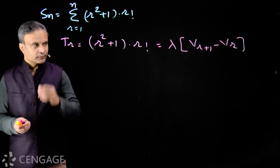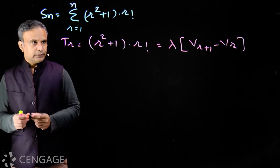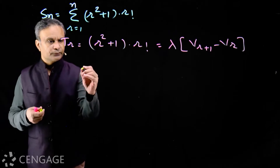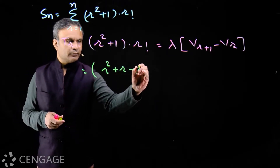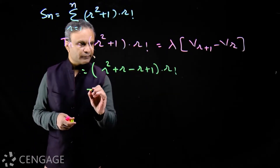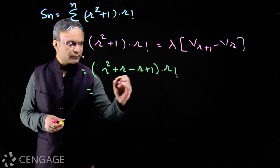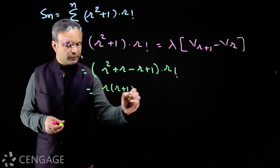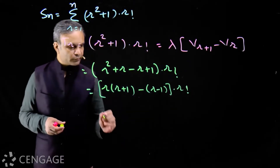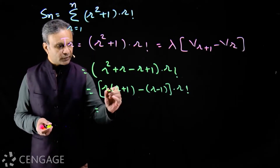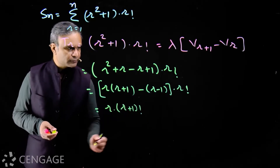We need to use a similar method here. In this bracket we can add and subtract r. We get (r² + r − r + 1) multiplied by r factorial. Now splitting from the minus sign: r(r+1) is in fact r into (r+1) factorial, so r into r factorial becomes r multiplied by (r+1) factorial.